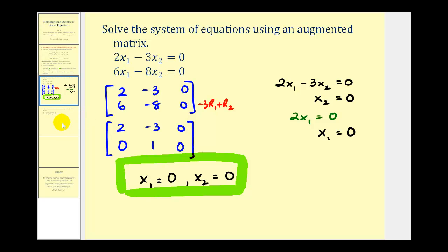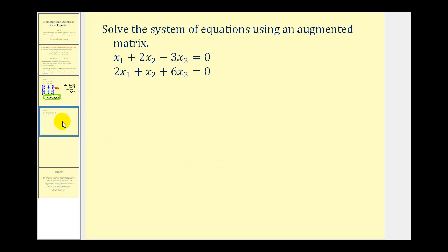Let's take a look at a second example. Notice in this homogeneous system we have three variables and two equations, which means we'll have one free variable and an infinite number of solutions. So not only will we have the trivial solution when all the variables are equal to zero, we'll have an infinite number of solutions which we'll express parametrically. Let's first manipulate this system using an augmented matrix.